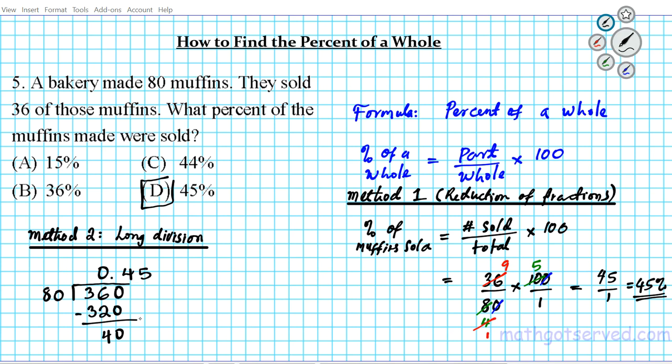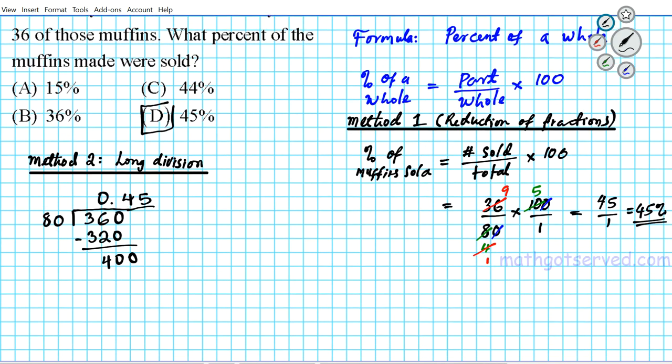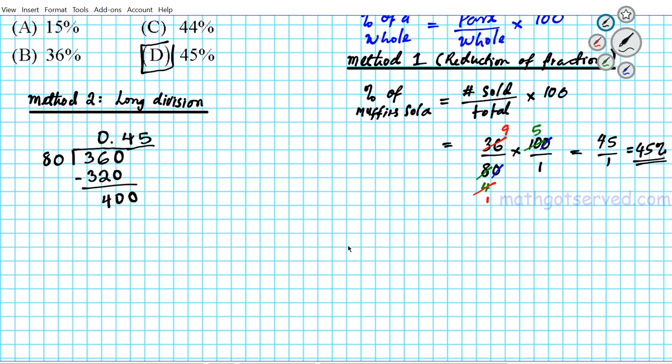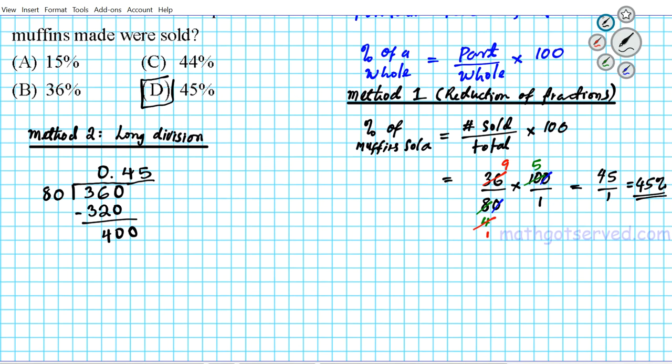Since 5 is located in the hundredths place, we add a 0 here first. You want to make sure that the digits line up perfectly. So our 5, 80 goes into 400 five times also. So 5 times 80, you have 400. And then when you add it all up, you end up with 0. We can clearly see that 36 divided by 80 is 0.45.